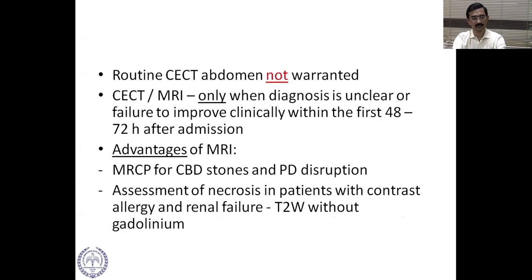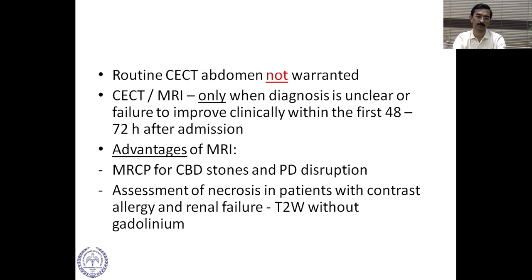A routine contrast-enhanced CT abdomen is not warranted. CECT or MRI is indicated only when the diagnosis is unclear or there is failure to improve clinically within the first 48 to 72 hours. The advantages of MRI include MRCP to assess CBD stones and pancreatic duct disruption, and T2-weighted imaging without gadolinium for necrosis in patients with contrast allergy or renal failure.